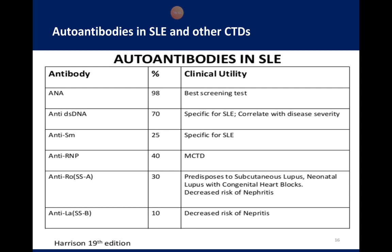Regardless of which disorder anti-RNP is associated with, whenever it is positive we always need to look for involvement of the heart by inflammatory processes such as inflammatory myocarditis, and screen these patients for any features of cardiological disorders. Anti-Ro and anti-La, mentioned earlier in relation to congenital heart block syndrome, are also present in Sjögren's syndrome.